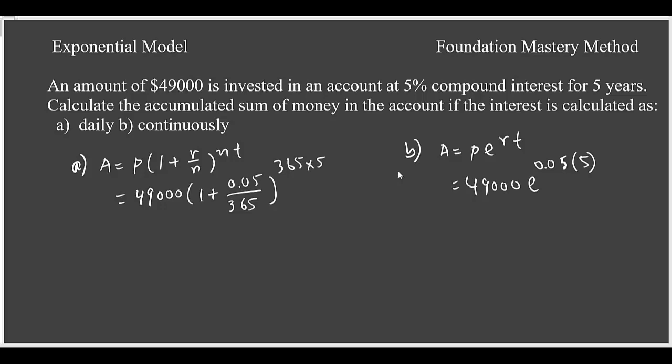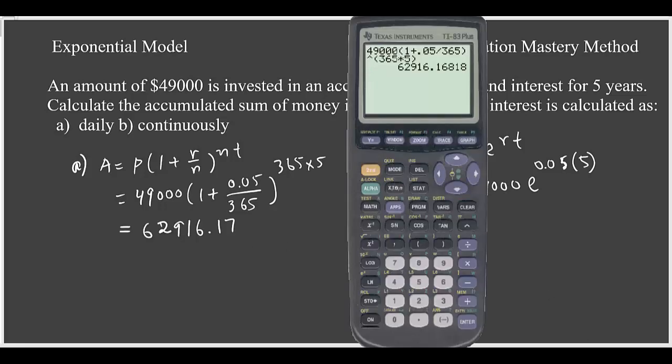So in this we just use the formula. I'm putting all these values here and then use the graphing calculator and see what answer we are getting and how we compare these two. So you can see that when I have 49,000 times (1 + 0.05/365)^(365×5), I am keeping within parentheses, then I get $62,916.17 rounded to two decimal places for daily compounding.